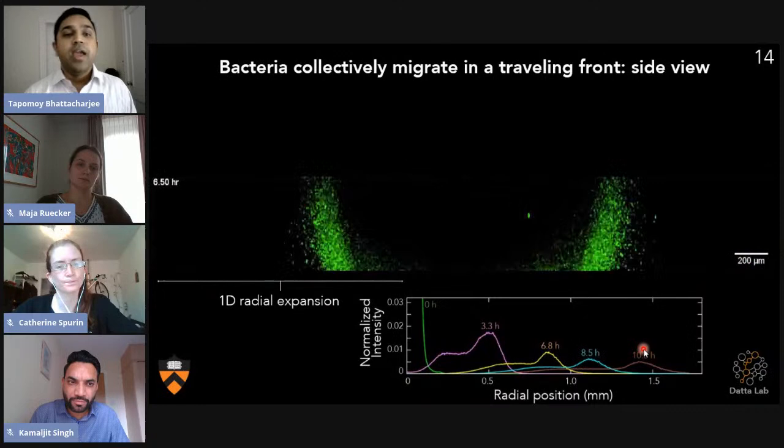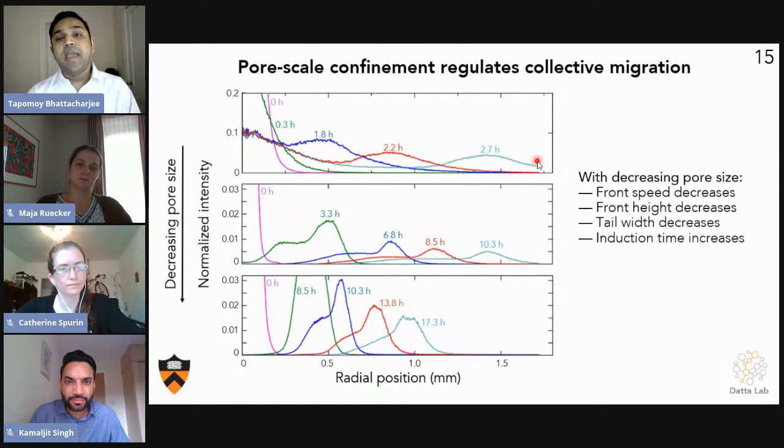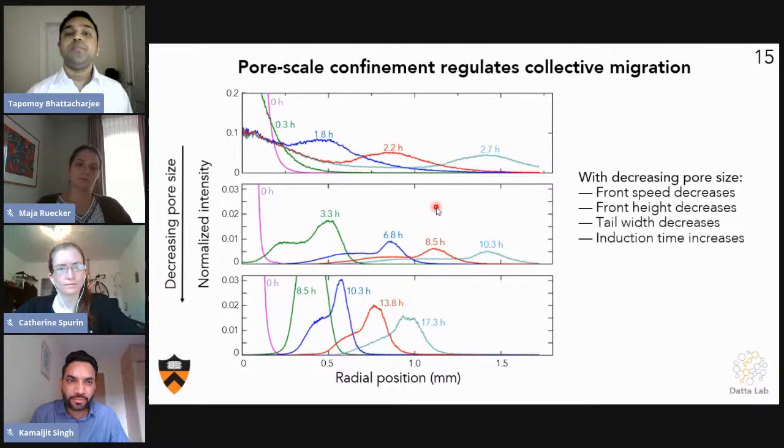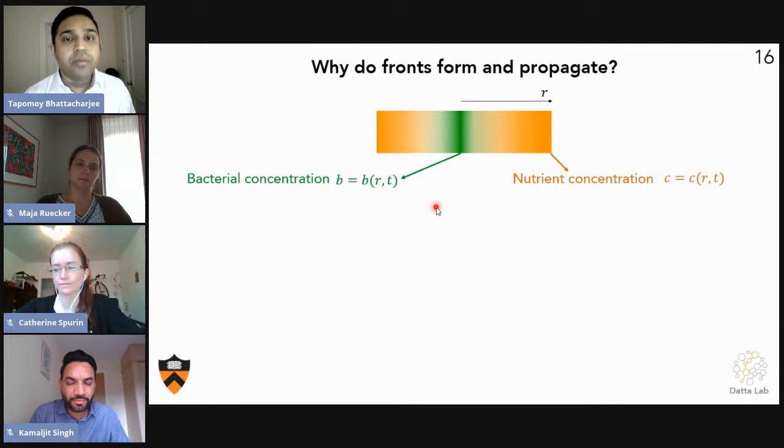We can collect this data and we can azimuthally average this fluorescent intensity to measure how fast these traveling waves are moving. In fact, if we repeat this process at different pore sizes, we can change the pore size. We find that as we decrease the pore size, the traveling wave speed decreases.